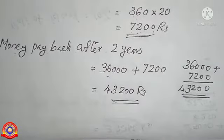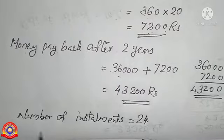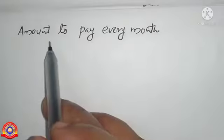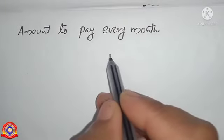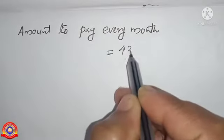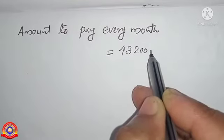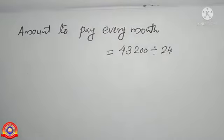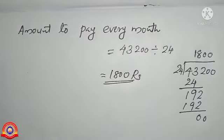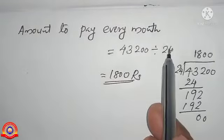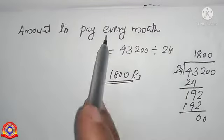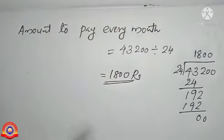Given that number of installments is equal to 24. Amount to pay every month is equal to money pay back after two years divided by number of installments, that is 43,200 divided by 24, which is equal to 1,800 rupees. So amount to pay every month is equal to 1,800 rupees.